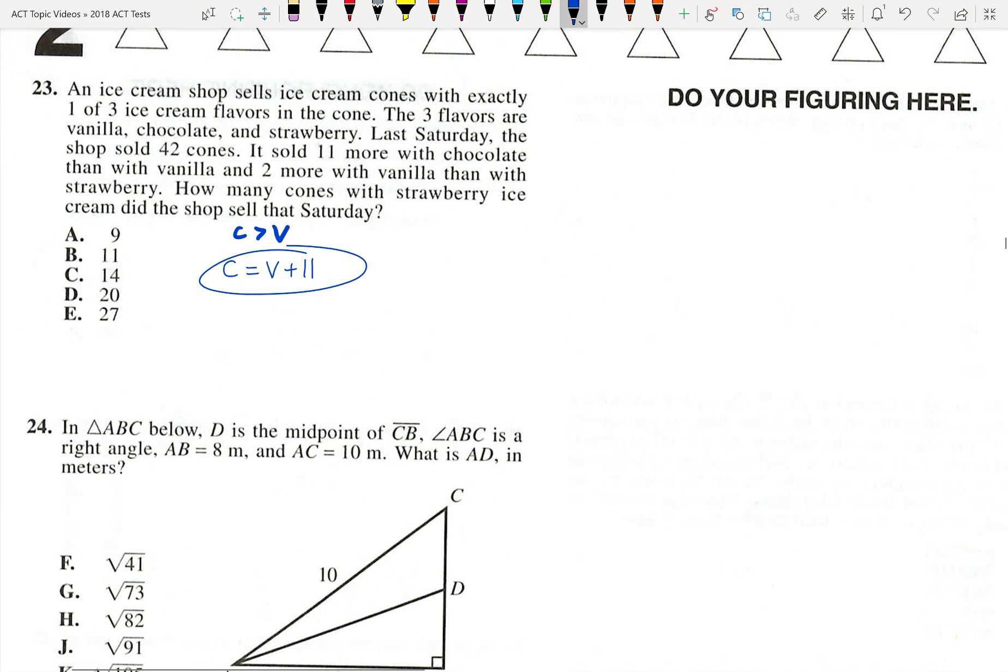Now writing this correctly is kind of hard. You've got to think about it. I usually write this in an inequality so I don't mess it up. Chocolate is bigger than vanilla, so you'd have to add to vanilla for it to equal the amount of chocolate sold.